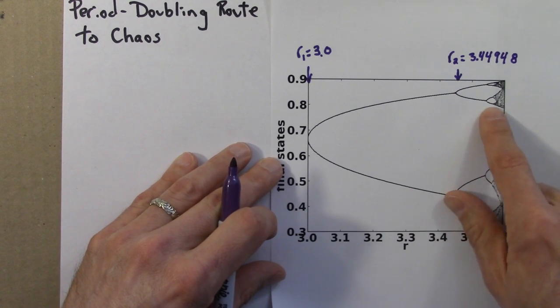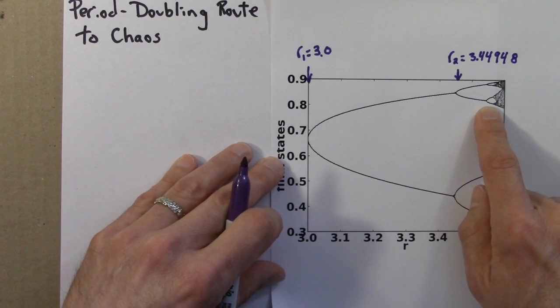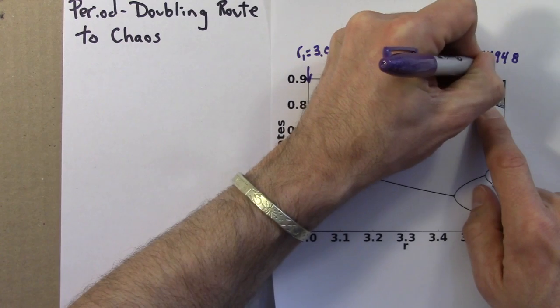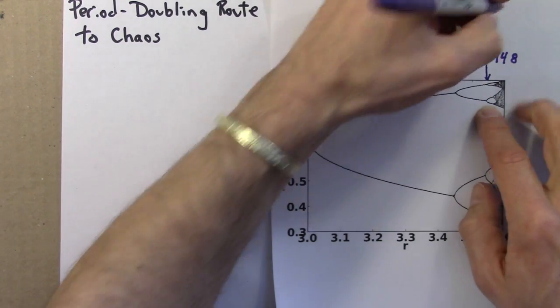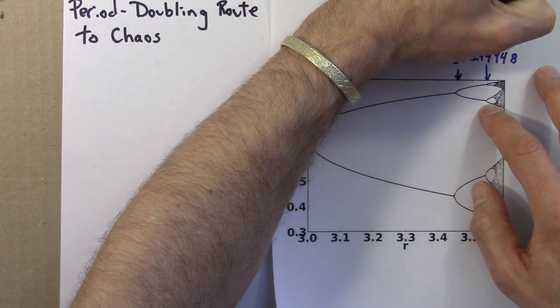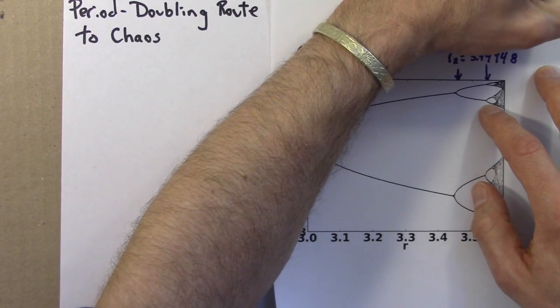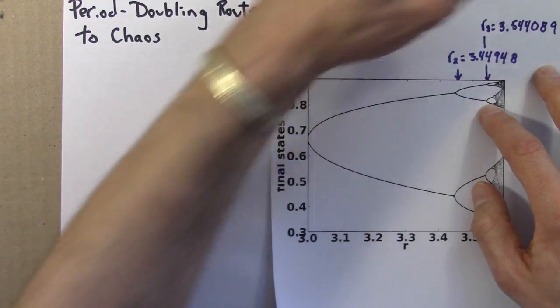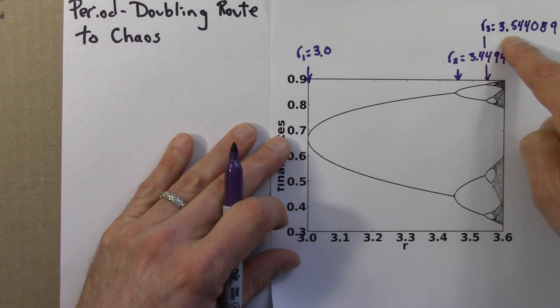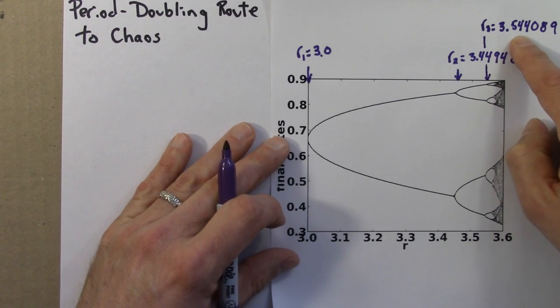There's also a transition over here. And this is where the behavior goes from period 4 to period 8. And I'll call that R3, it's the third bifurcation. And that turns out to be at around 3.544089. So that's where this transition occurs. To the left of this number we have period 4. A little to the right of this number, we have period 8.